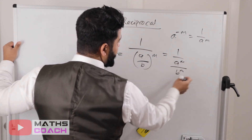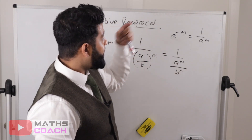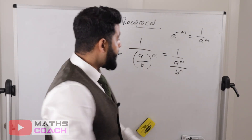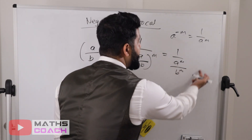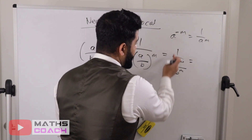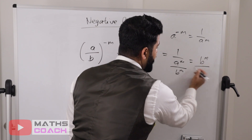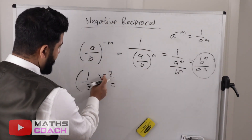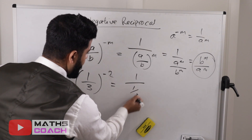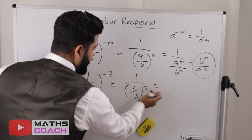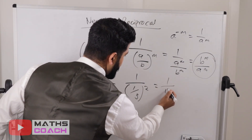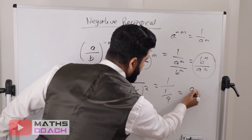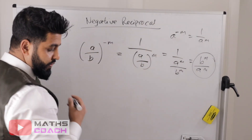When you have 1 divided by a fraction, take the number at the bottom and multiply it at the top, giving b to the power of m over a to the power of m. Applying this: one-third to the power of minus 2. That becomes 1 over one-third squared. One squared is 1 and three squared is 9, so we get 1 over one-ninth. The 9 multiplies to the top, giving 9 over 1, which is simply 9.